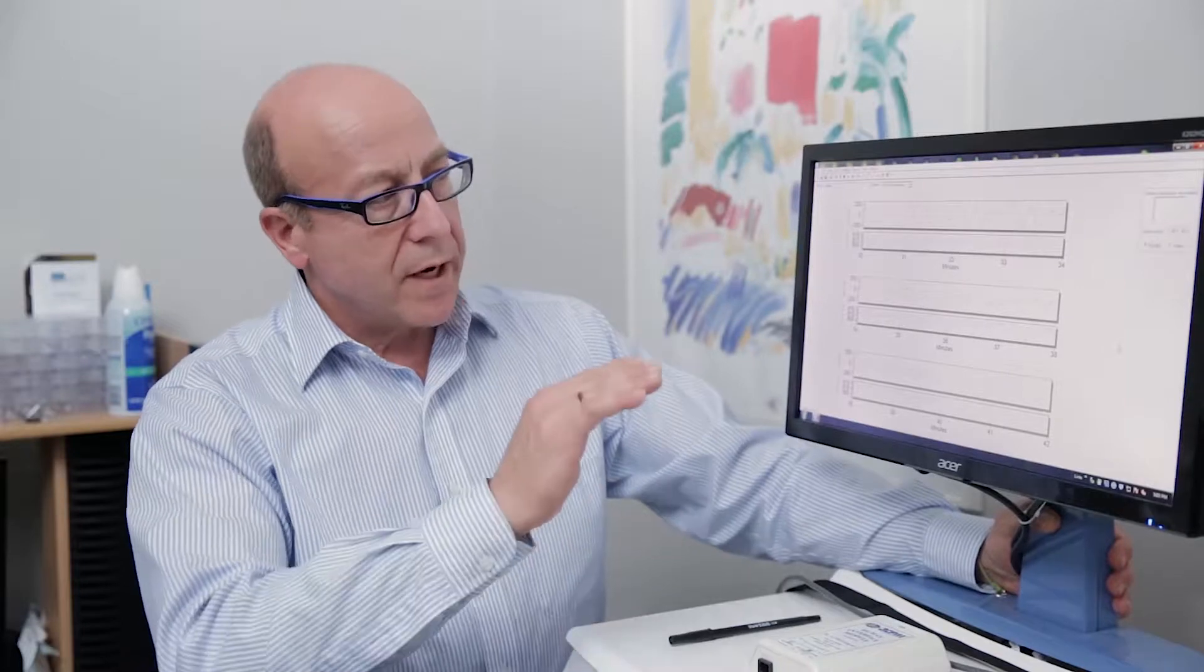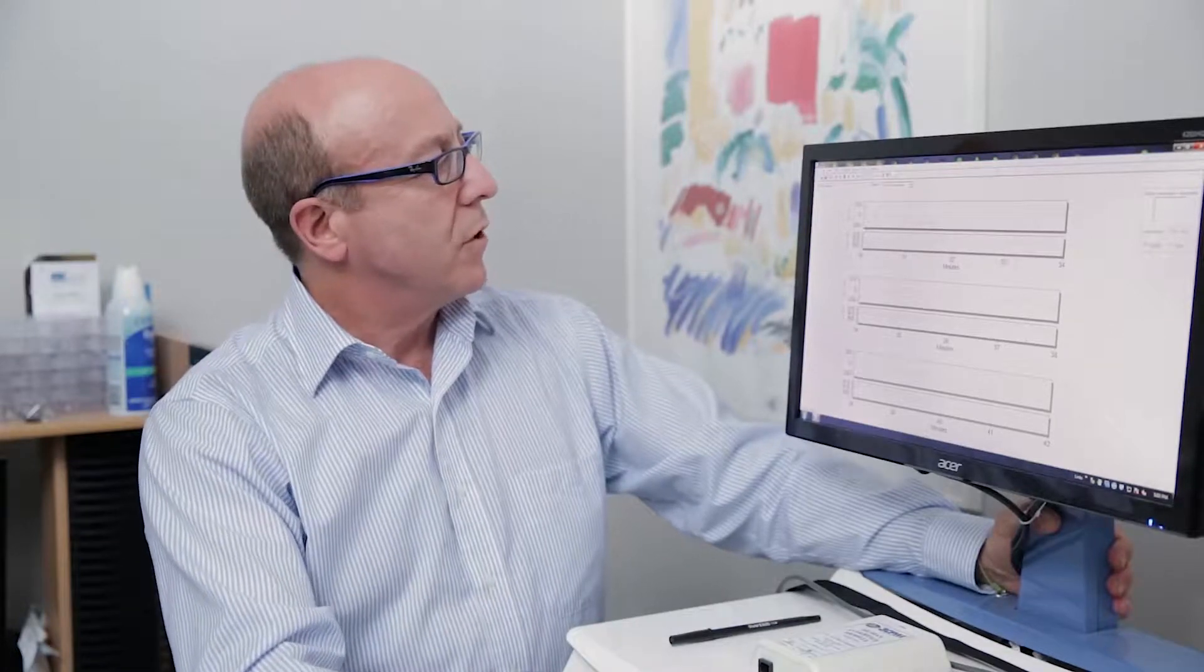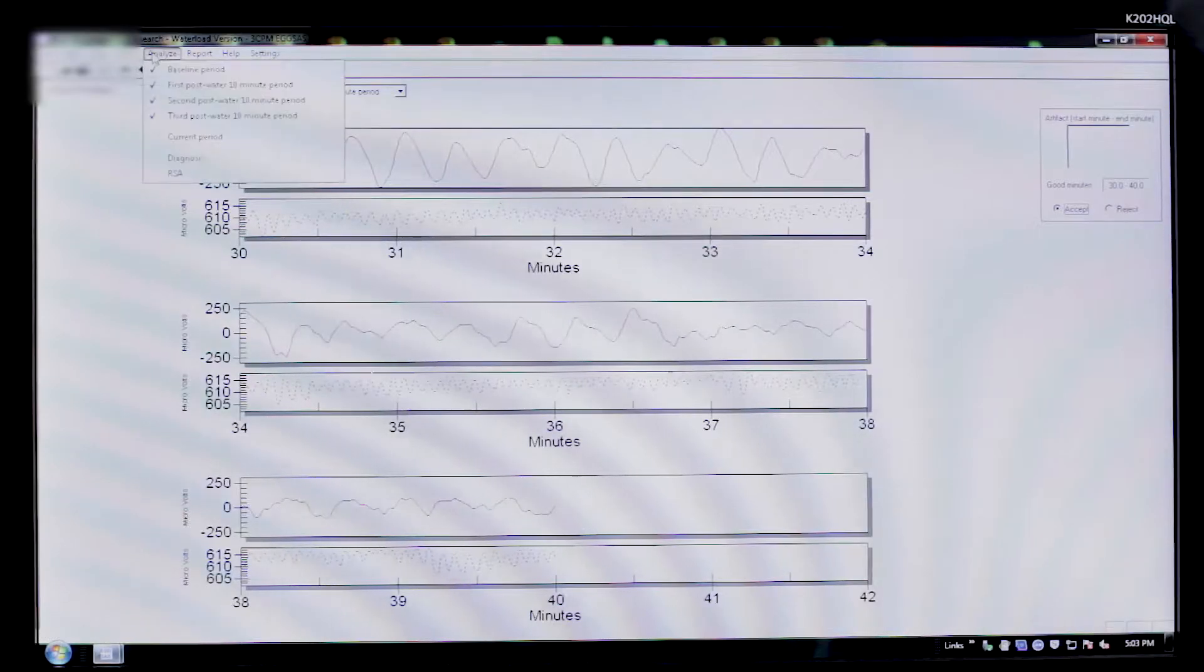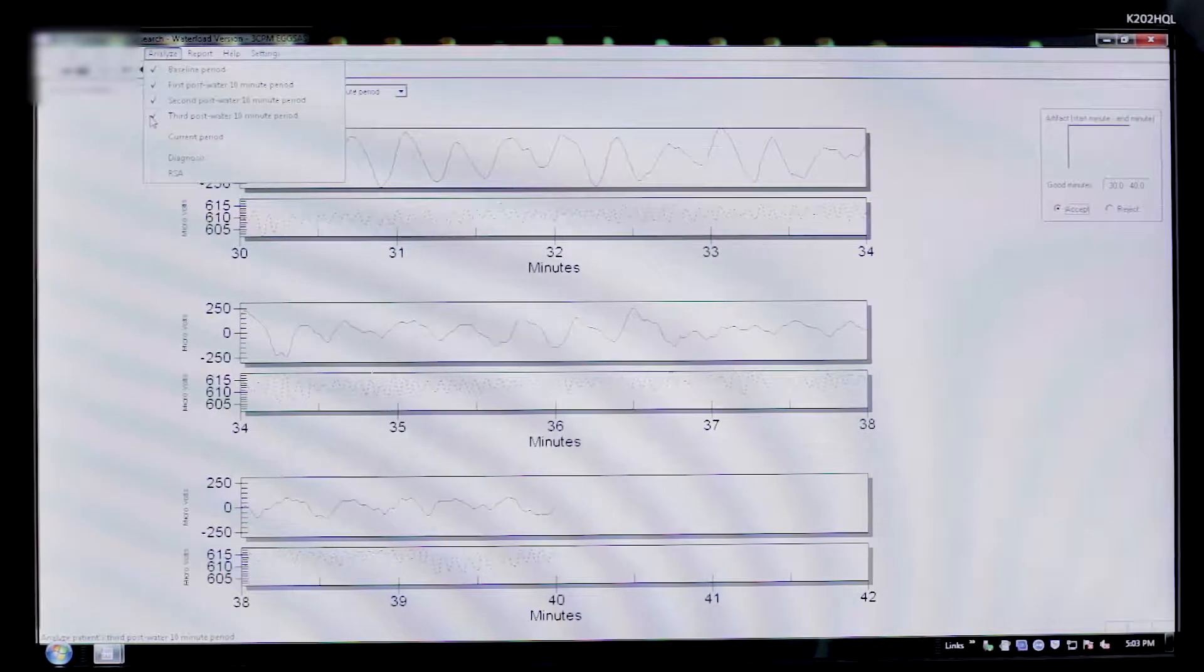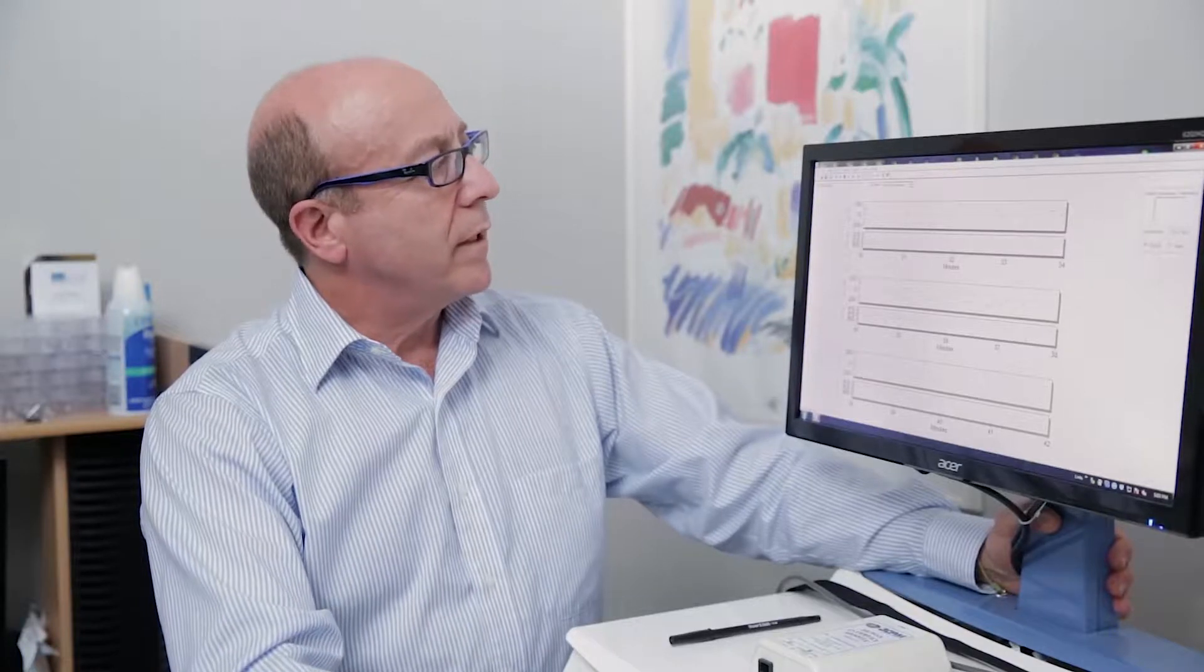Once we have saved all of the good minutes, another way that you can determine that you've actually analyzed all of these is you can go to view or analyze here at the top bar, and you'll see a check mark next to each 10-minute period that was analyzed. Extra steps, not necessary. We look again at the running spectral analysis, and then the next thing is we're going to look at the summary graphs.